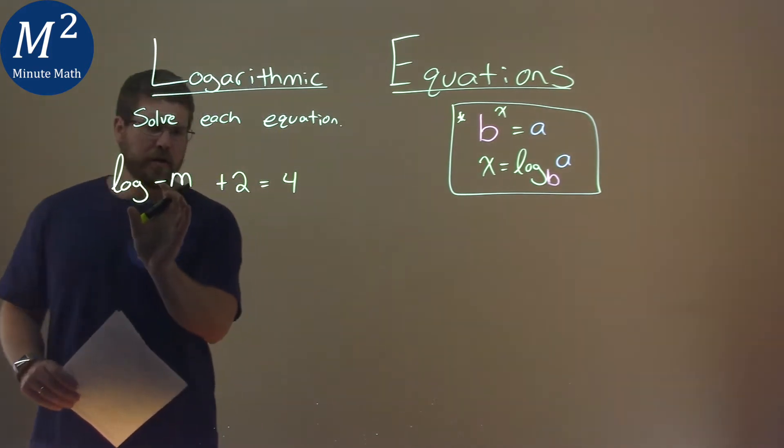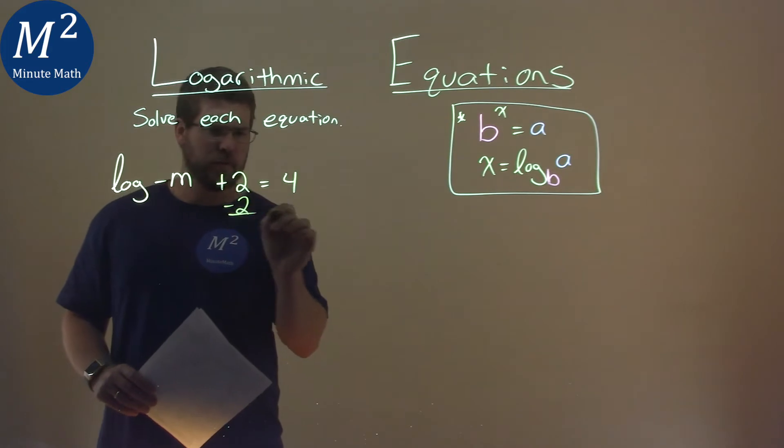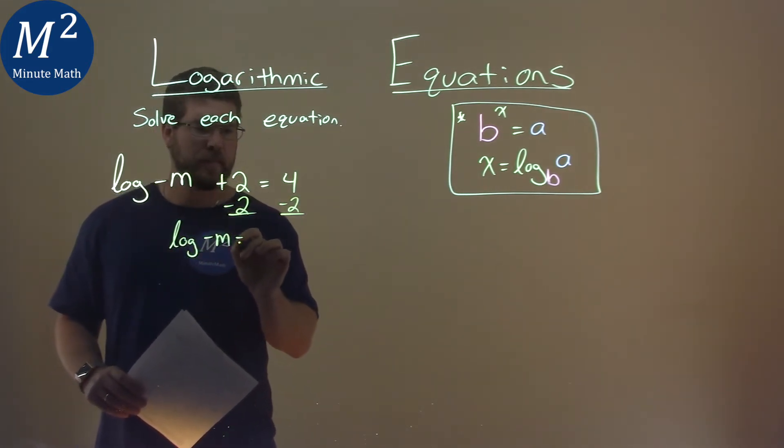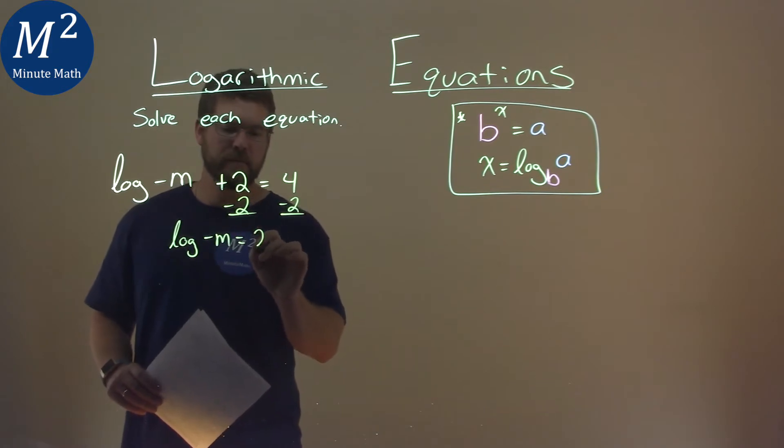So we want to get our log by itself. I subtract the 2 from both sides, and I have log of negative m equals 4 minus 2, which is positive 2.